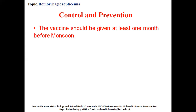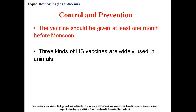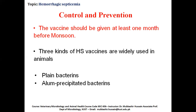Control and prevention: the main way to control this disease is by vaccinating the animals, which should be done one month before the onset of monsoon season. There are three types of HS vaccines available in the market: plain vaccines, alum-precipitated vaccines, and oil adjuvant vaccines. The alum-precipitated vaccines are given at intervals of four or six months, while the oil adjuvant vaccines are given once every year.